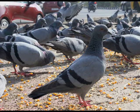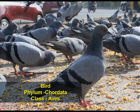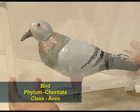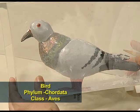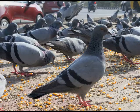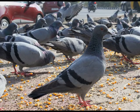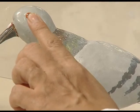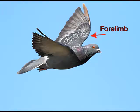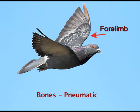The fourth example is the bird, which belongs to phylum Chordata and class Aves. The jaws are modified into a beak. The shape of the body is boat-shaped. The four limbs are modified into wings. The bones are pneumatic, meaning they have air spaces, which makes the body lighter.